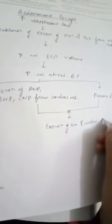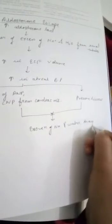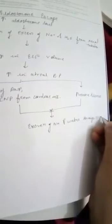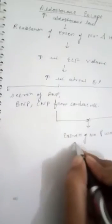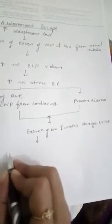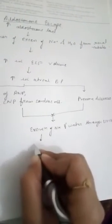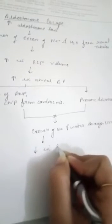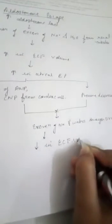As sodium and water are excreted through urine, there is a decrease in extracellular fluid volume.